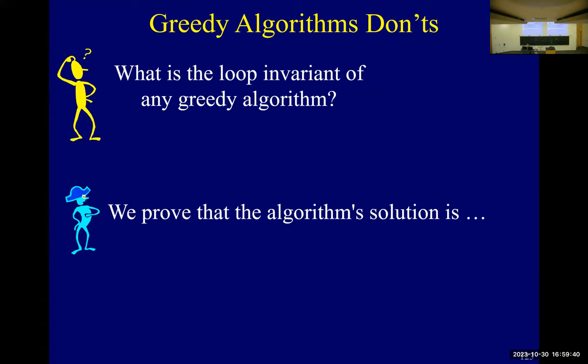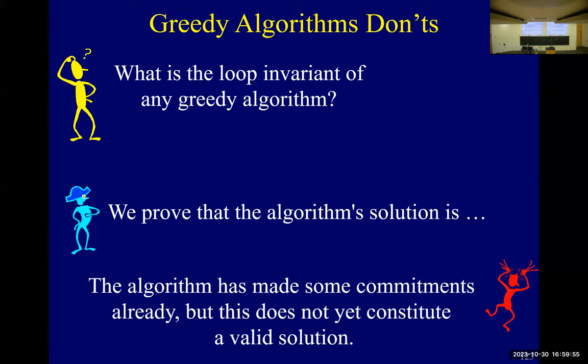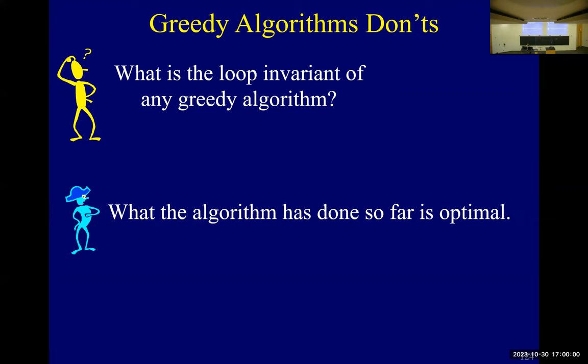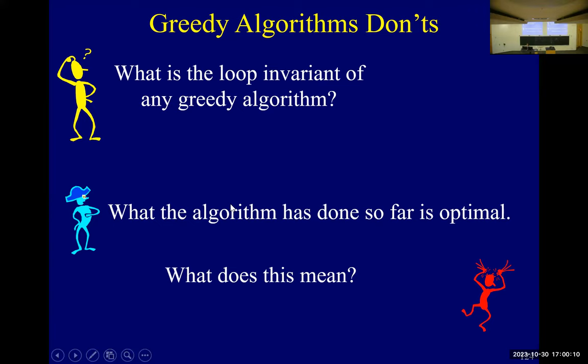On tests, I've asked people: what is the loop invariant of a greedy algorithm? And they've said: 'we proved that the algorithm solution is...' — but that's wrong, because the algorithm doesn't have a solution yet, it only has a partial solution. What the algorithm has done so far is not simply 'optimal,' but if you look at the potential, the potential is still as good.